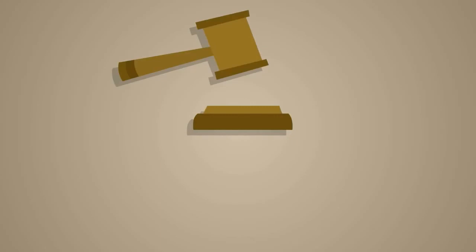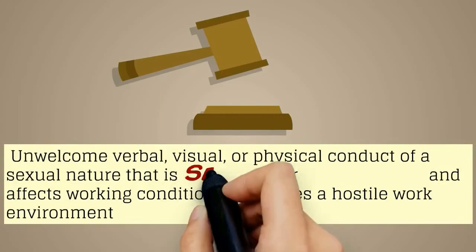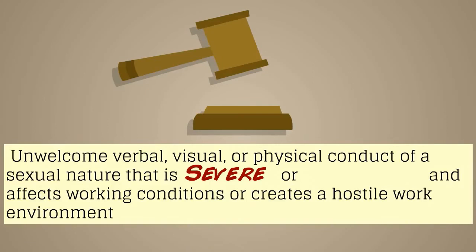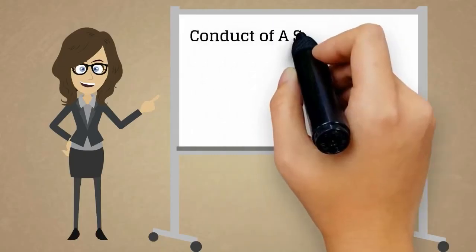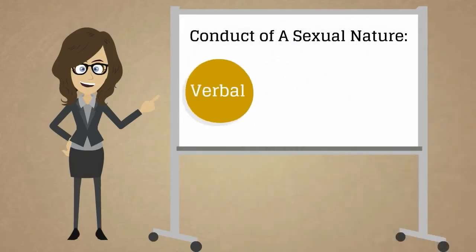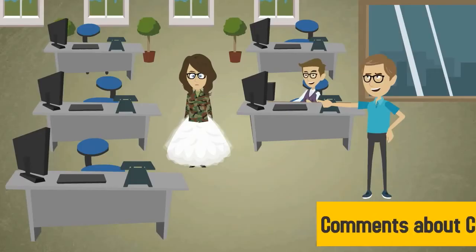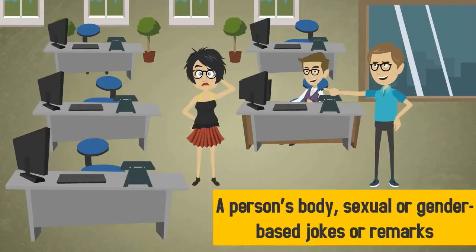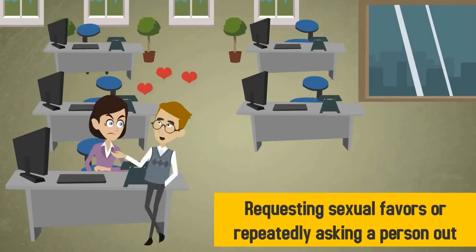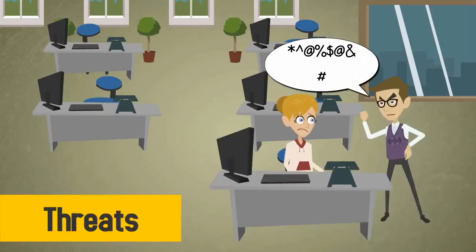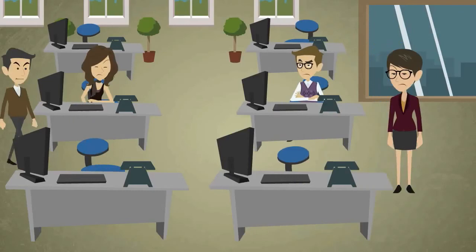The law defines sexual harassment as unwelcome verbal, visual, or physical conduct of a sexual nature that is severe or pervasive and affects working conditions or creates a hostile work environment. Conduct of a sexual nature is broken into three parts: verbal, visual, and physical. Verbal includes comments about clothing or a person's body, sexual or gender-based jokes or remarks, requesting sexual favors or repeatedly asking a person out, sexual innuendos, threats, and spreading rumors about a person's personal or sexual life.